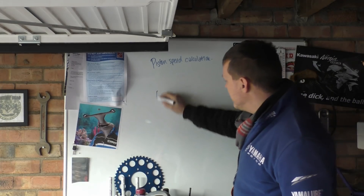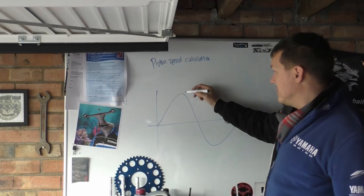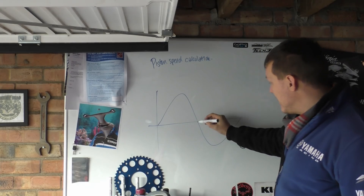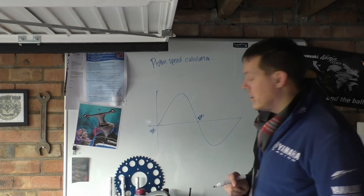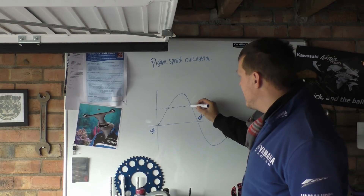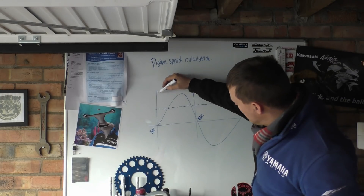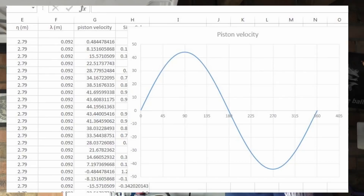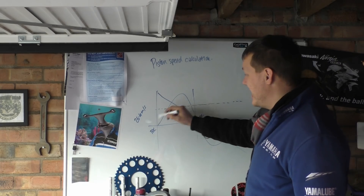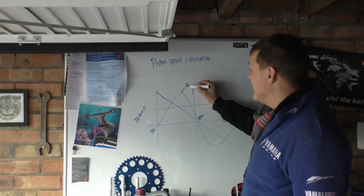When we actually calculate it, our piston speed does this — it accelerates to its maximum, and then it goes the opposite way. Here it's at bottom dead centre, and this is TDC. So if we take just one stroke, our average speed here is 26.4 metres per second. But as you can see, this is a lot higher — so our peak here is a lot higher.